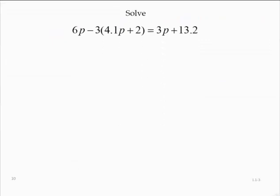6p minus 3 times the quantity 4.1p plus 2 is equal to 3p plus 13.2.